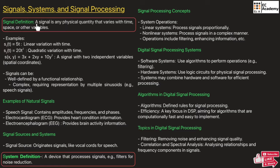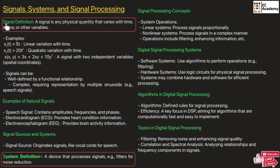A signal can be defined as any physical quantity that varies with time, space or other variables. Generally, we can say a signal is one that conveys information — signal will convey some information.